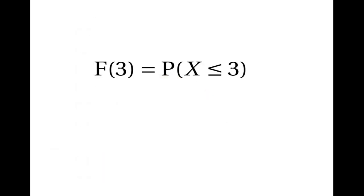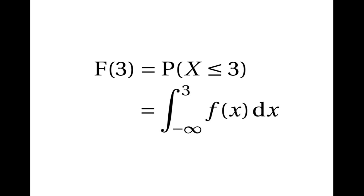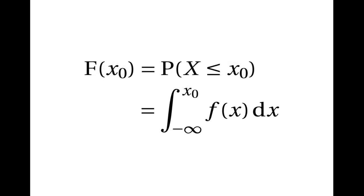F of 3, being the probability that x is less than or equal to 3, is the integral of the probability density function up to the limit x equals 3. And in general, F of x0, being the probability that x is less than or equal to x0, is equal to the integral of the probability density function up to the limit x equals x0.